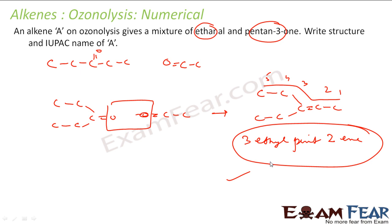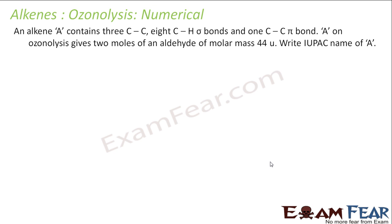Let's do one more numerical. An alkene A contains three C-C sigma single bonds, eight C-H sigma bonds, one C=C double bond. Alkene A on ozonolysis gives two moles of aldehyde of molar mass 44. We have to find the IUPAC name. Aldehyde is generally of this form: some alkyl group CHO. The general formula of aldehyde will be CnH2n+1CHO.